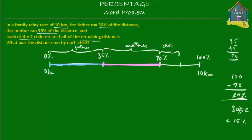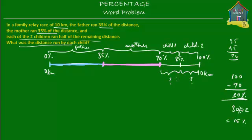Child number one ran 15%. Adding 15% to 70% gives 85%, so the mother hands the baton to the first child who finishes at 85% of the distance. Then he hands the baton to child number two, who runs the remaining 15% of the distance — since 100 minus 85 is 15%. We need to find the actual distance represented by each child's question mark.